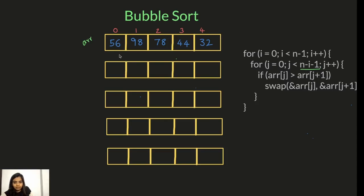First, we compare these two. Is 56 greater than 98? No, it's not, so we don't swap. Then second, we compare the next two — index one and two. Is 98 greater than 78? Yes, so then we swap it. And like that, we just keep continuing till the entire array is sorted.